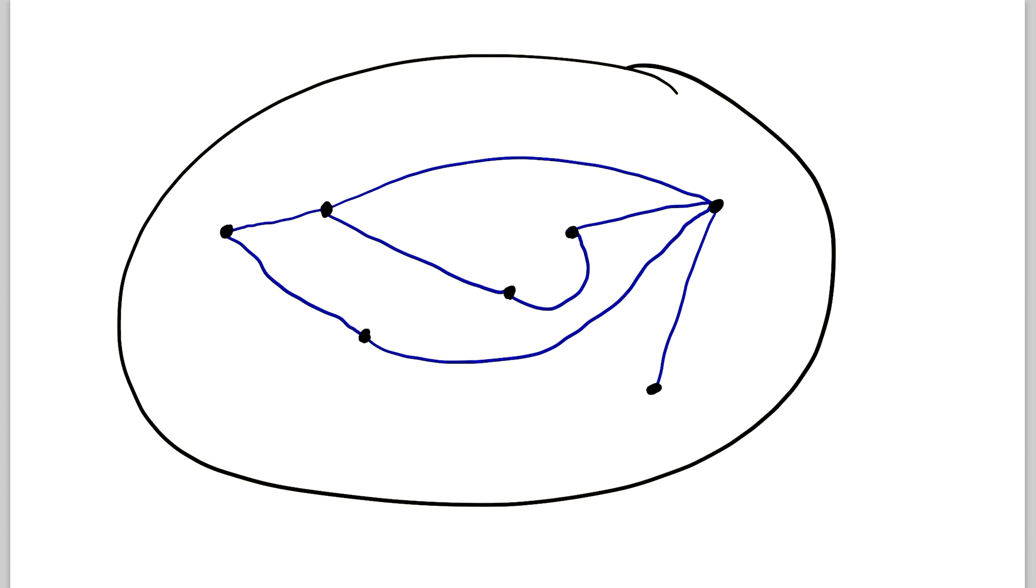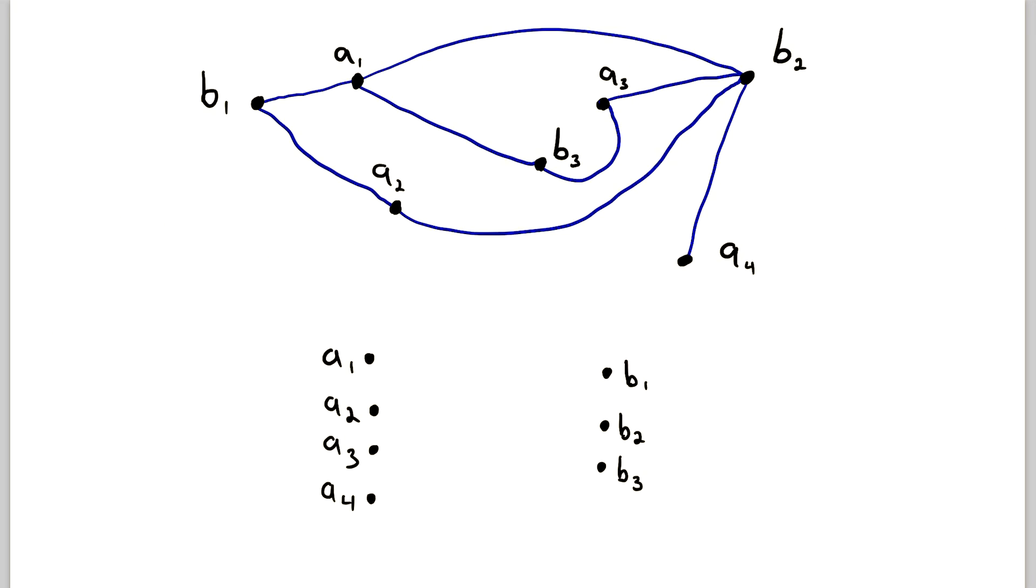So this graph here is bipartite, and if you want a little challenge, then take a second to pause the video, look at the graph, and try to see a partition of the vertices that demonstrates that this is a bipartite graph. Now I'm basically about to give the answer away, so if you're satisfied, let's swipe over here.